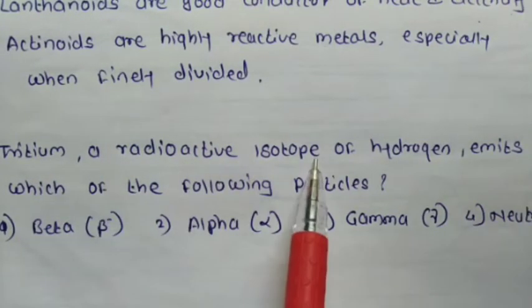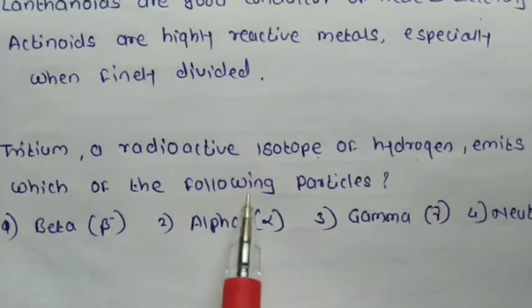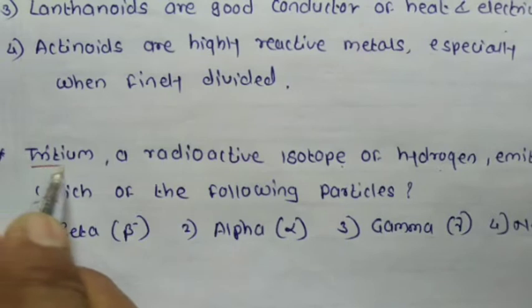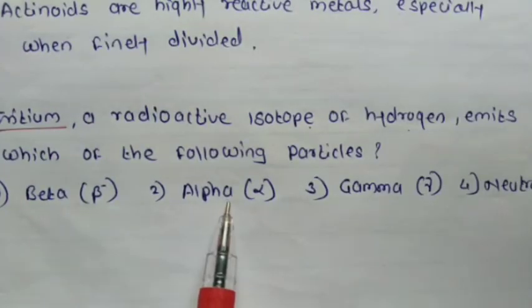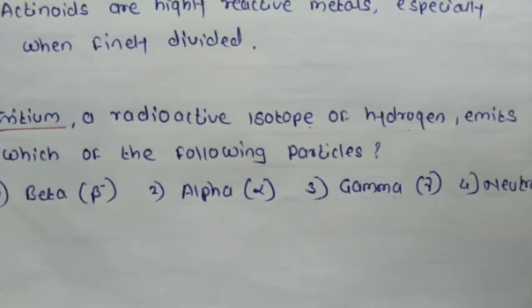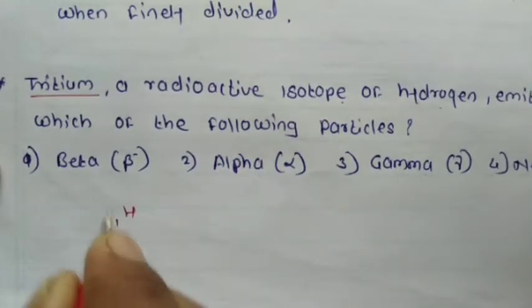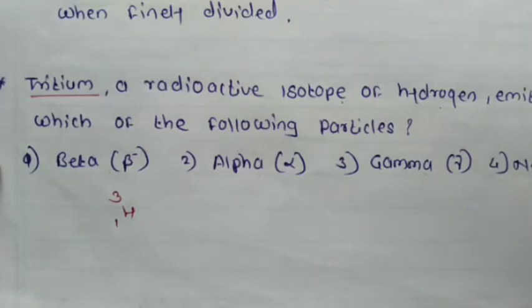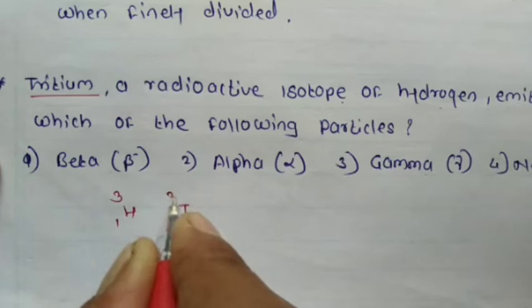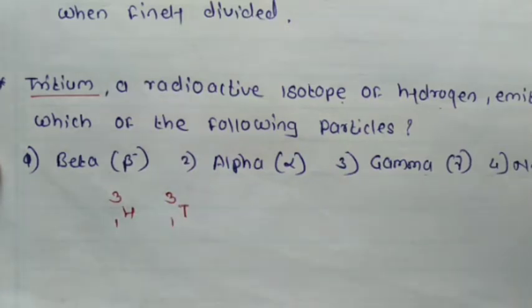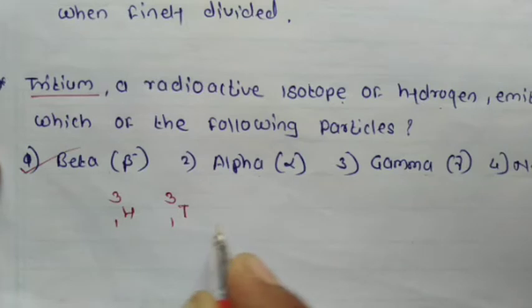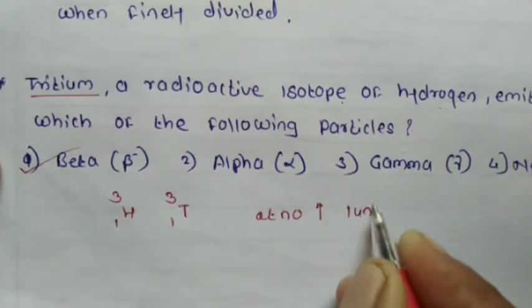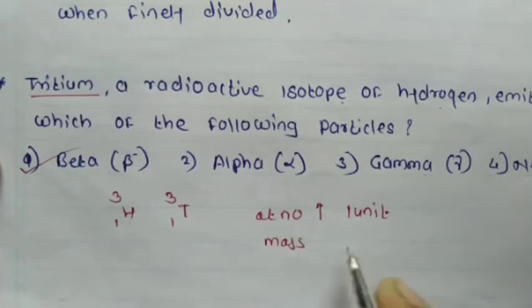Question 3: Tritium, a radioactive isotope of hydrogen, emits which of the following particles? Options: beta particle, alpha particle, gamma particle, and neutron. Tritium is represented as ¹H₃ or T, with atomic number 1 and mass number 3. Tritium is a radioactive isotope of hydrogen and it emits a beta particle. After emission of the beta particle, atomic number increases by 1 unit while the mass number remains the same.